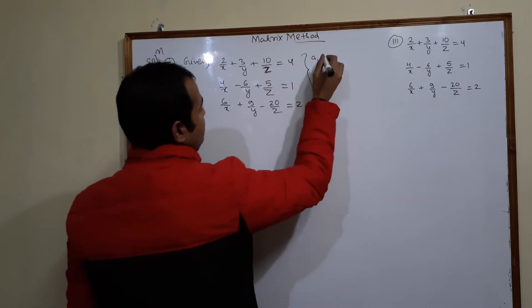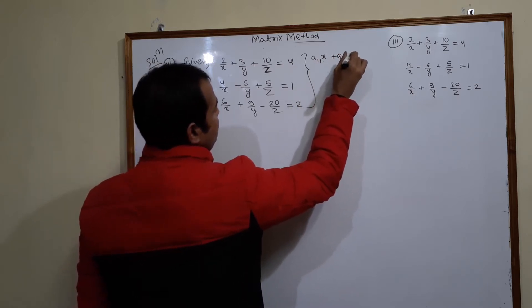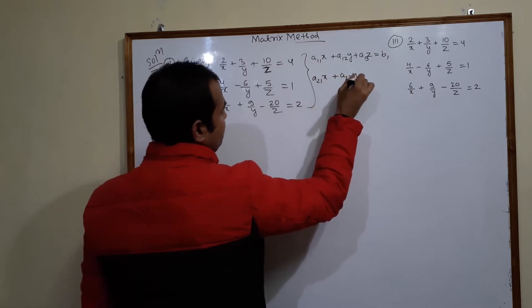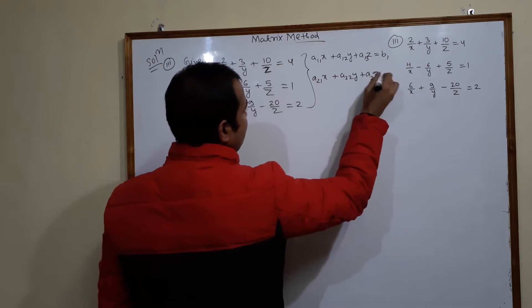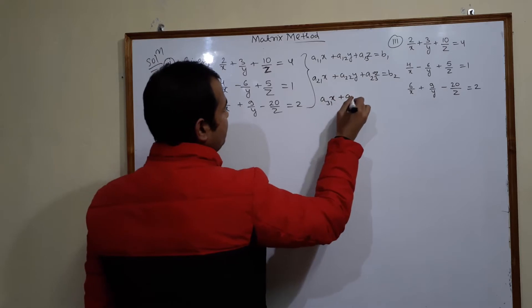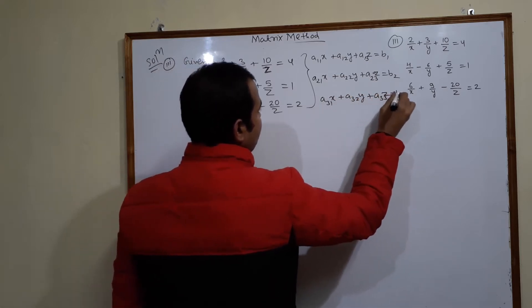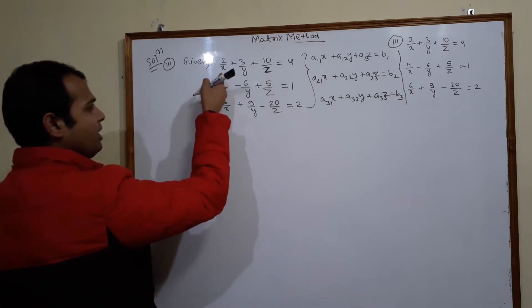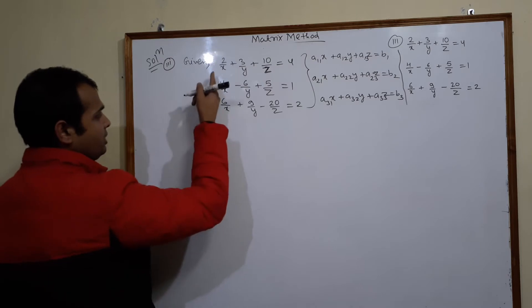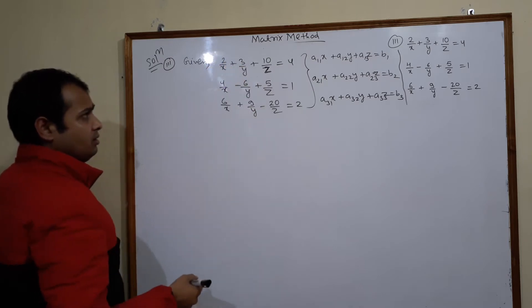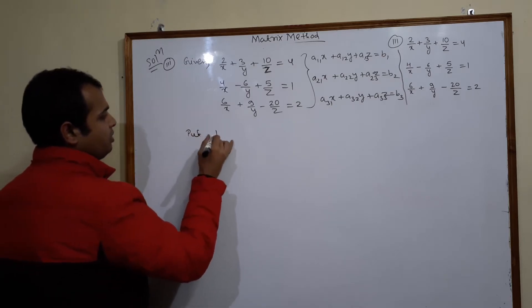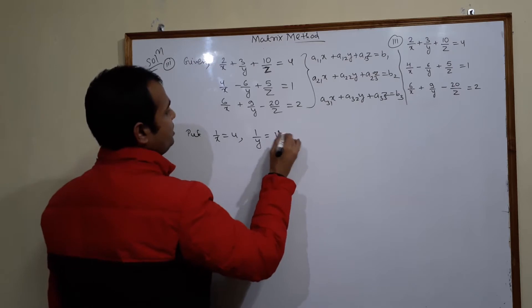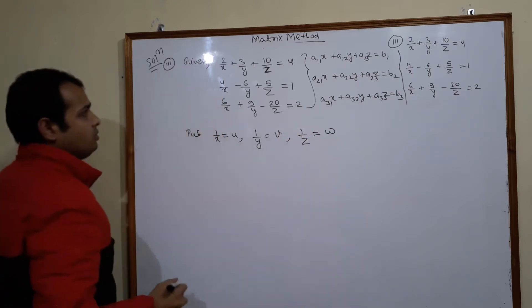We should have the system in this form, but here x, y, z are in the denominator. So what we can do is substitute: put 1/x = u, 1/y = v, and 1/z = w.